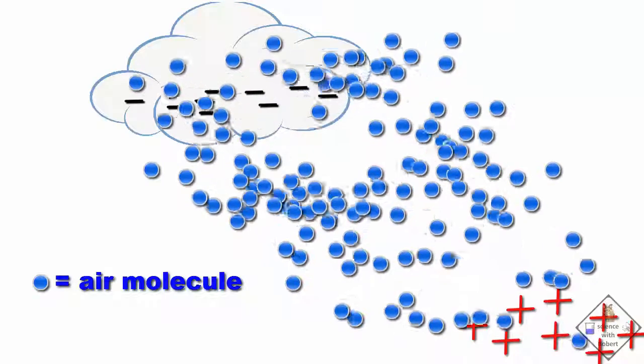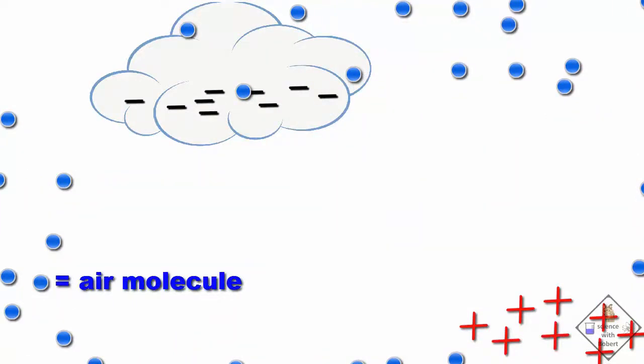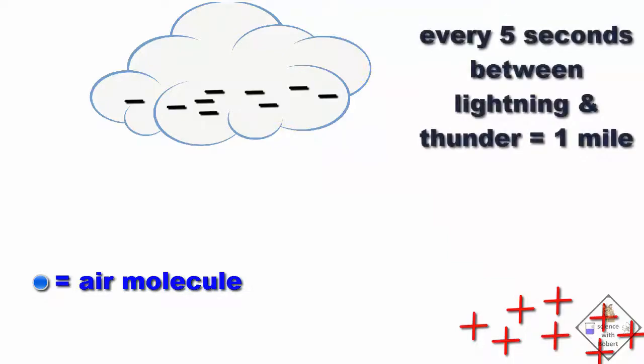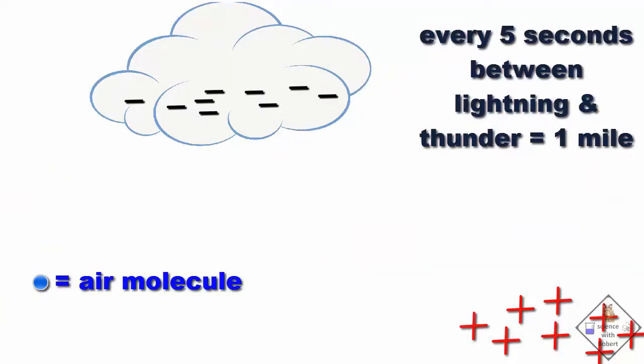Like any explosion, a loud, booming burst of noise occurs. Since light travels a million times faster than sound, we always see lightning before hearing thunder. In fact, every five seconds between lightning and thunder corresponds to about one mile of distance from where the lightning occurred.